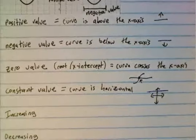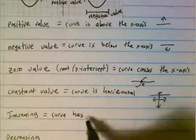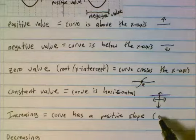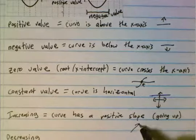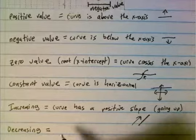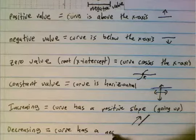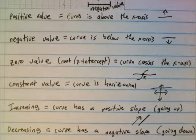Next up, increasing — that just means the curve has a positive slope, which is to say it's going up. Decreasing is the reverse: the curve has a negative slope, meaning it's going down.